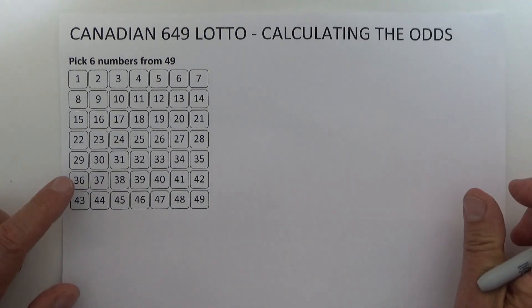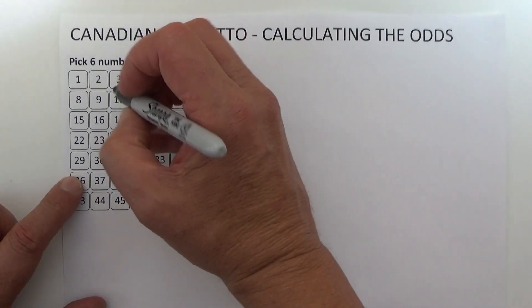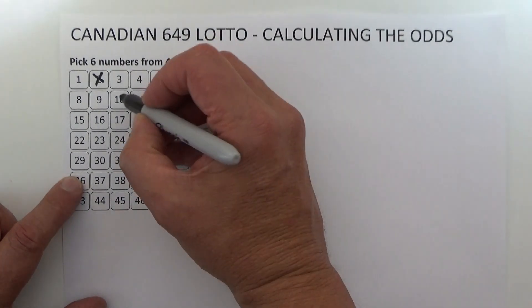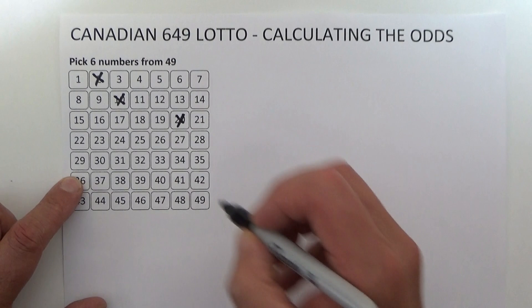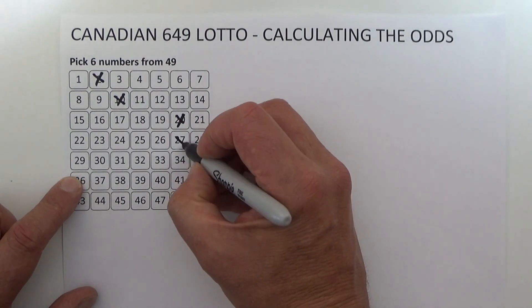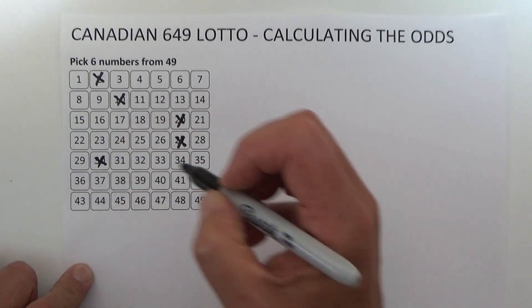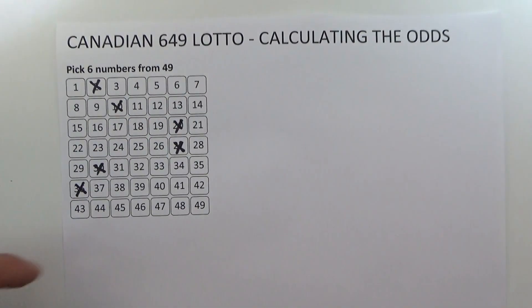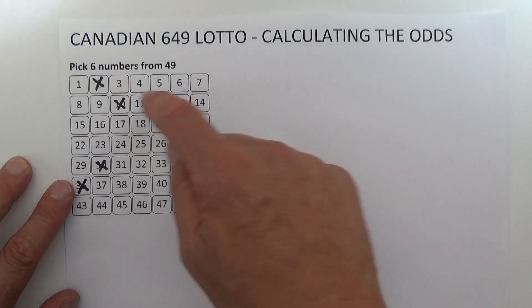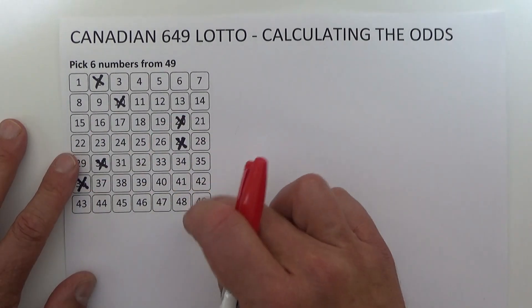I'm going to randomly select six numbers from this coupon. I might take 2, and let's say 10, maybe 20, and 27 as the fourth number, then 30 and 36. So I've selected six numbers from 49.